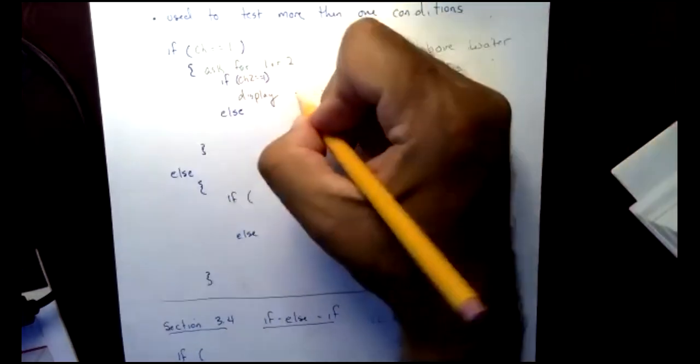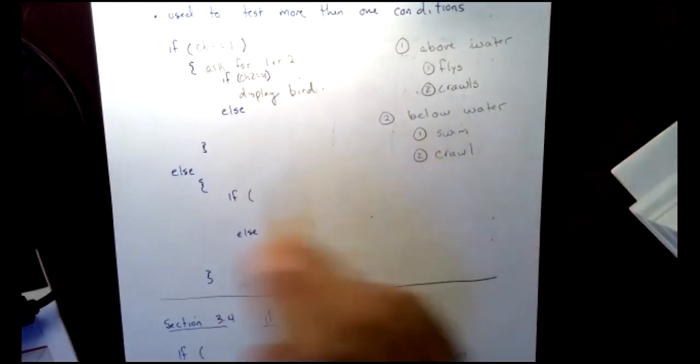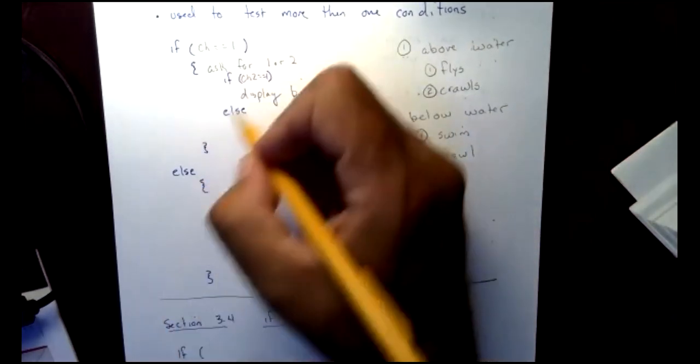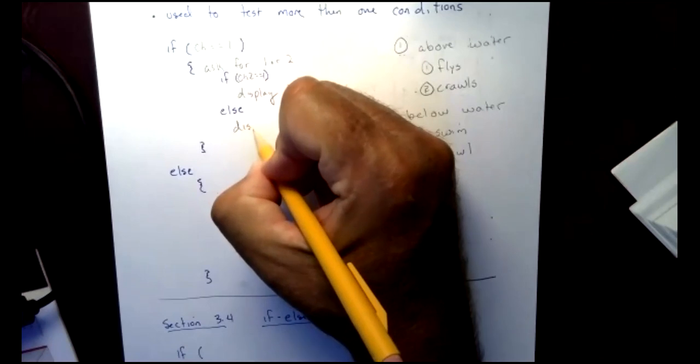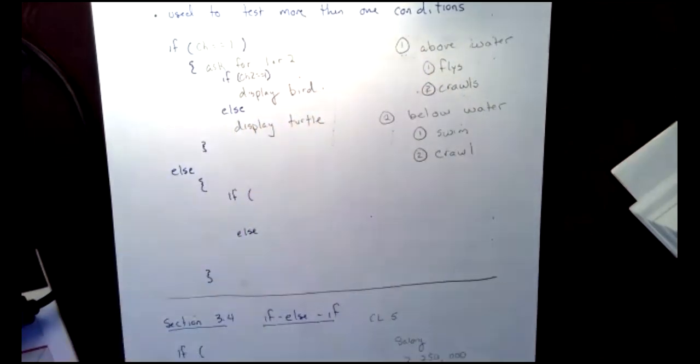So if the choice two is it flies, then I might be displaying, what did we say? If it flies, the bird. And then I have, if it's not a bird, that means it has to crawl. So I have my else and now I might want to display a turtle.